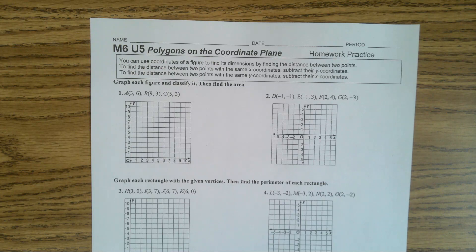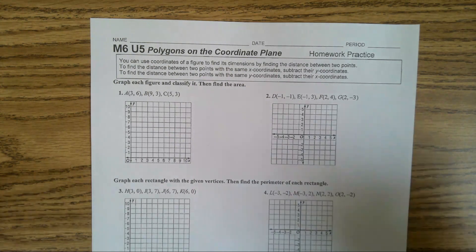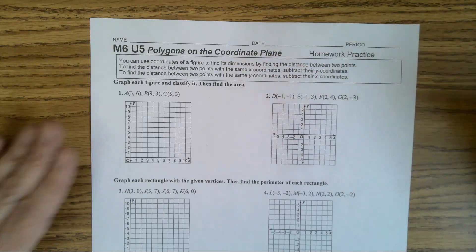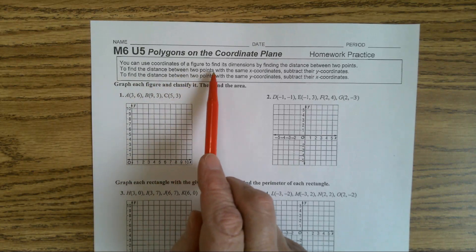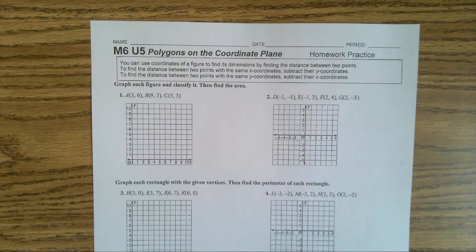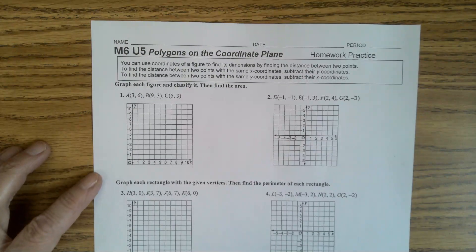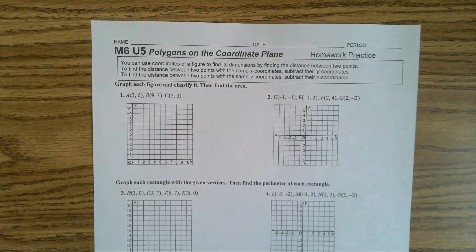This is really going to be our notes section, and then we're going to practice graphing different shapes and finding their area, and sometimes we'll find its perimeter. It says you can use coordinates of a figure to find the dimensions by finding the distance between two points. To find the distance between two points with the same x-coordinate, subtract the y-coordinates. To find the distance between two points that have the same y-coordinates, you subtract the x-coordinates.